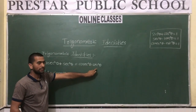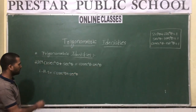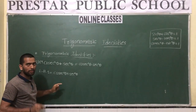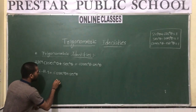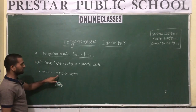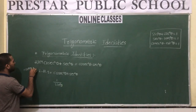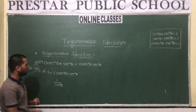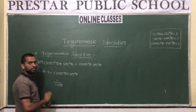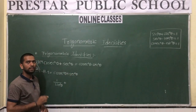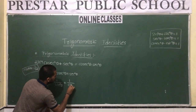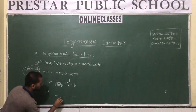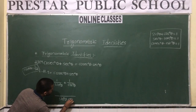Convert cosecant and secant in terms of sine and cos. cosecθ is the reciprocal of sinθ, so in place of cosec²θ write 1/sin²θ. Since sec²θ is the reciprocal of cos²θ, in place of sec²θ write 1/cos²θ. Now take LCM: sin²θ · cos²θ.